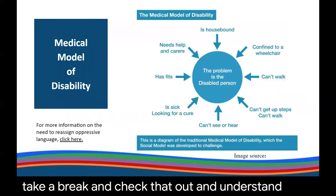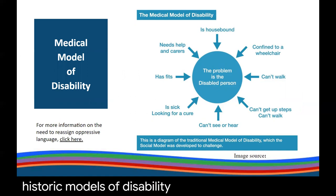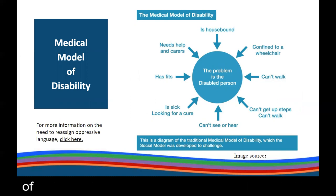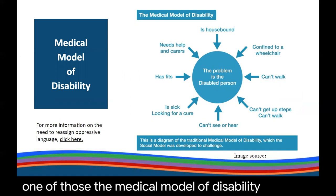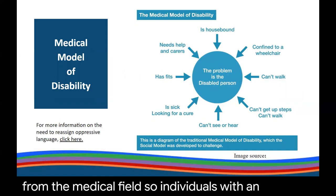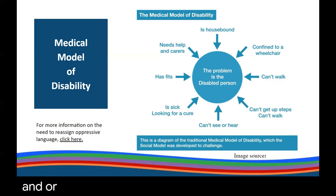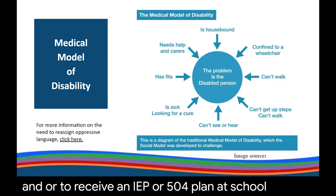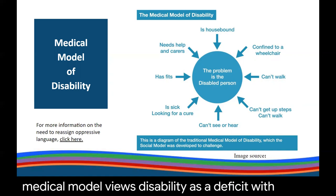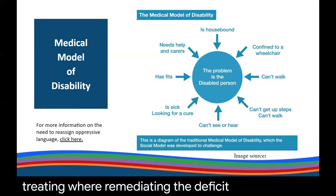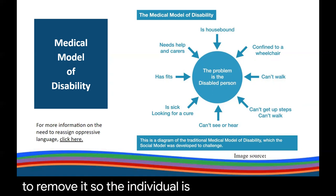An understanding of historic models of disability may further situate the neurodiversity movement. While there are many models of disability, we are going to consider just two models most applicable to the experiences of neurodivergent people. The medical model of disability stems from the medical field. Individuals with an impairment are given a disability diagnosis to access services and treatments such as medical treatments, or to receive an IEP or 504 plan at school. The medical model views disability as a deficit with a person's body or mind. The focus of this model is treating or remediating the deficit in an effort to make the individual typical or normal.